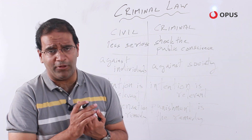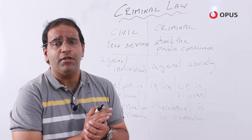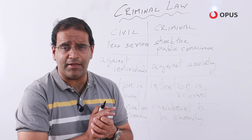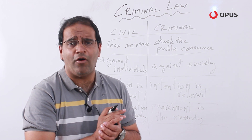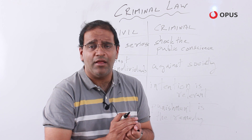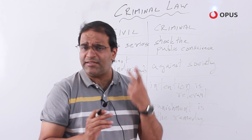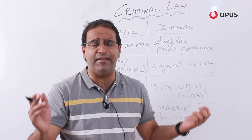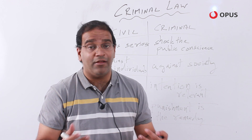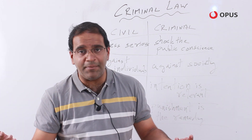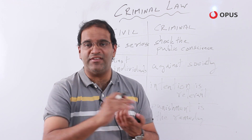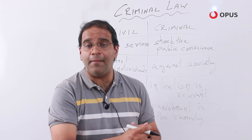Another distinguishing feature is the procedure to be followed. When a crime is committed, the first step is for a person to lodge a police complaint and the police register what we call an FIR — a First Information Report — the very first time the police are getting information about a crime having been committed. After the FIR is lodged, the police now have to take steps to ascertain whether a crime was committed, who committed it, why, and whether it was done intentionally. So first comes the complaint coupled with the FIR, then comes the investigation by the police.